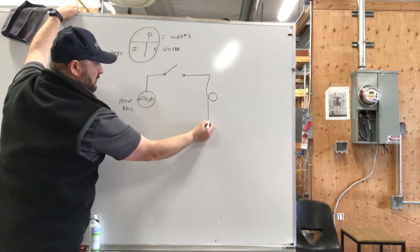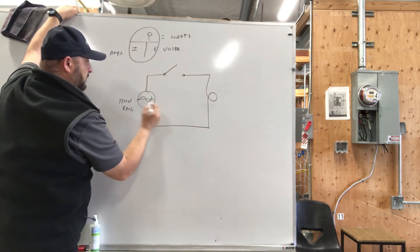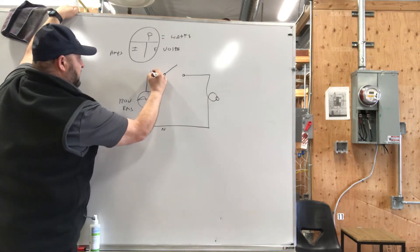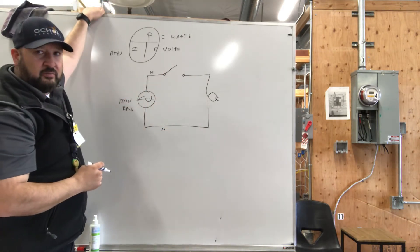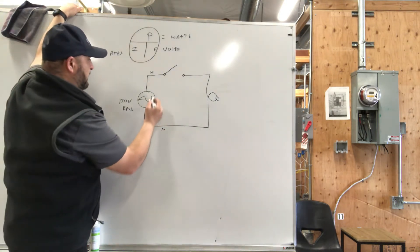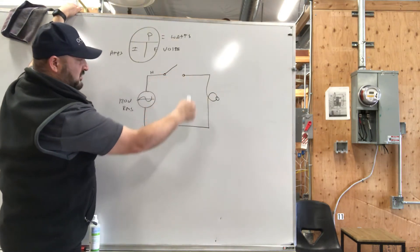We have a load and a conductor. This is the neutral side, this is the hot side. Black wire, red wire, two wire, this is white wire coming back. Whatever current goes up has to come back in.